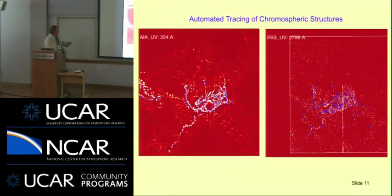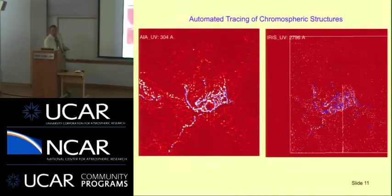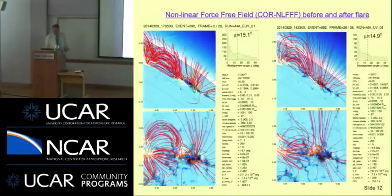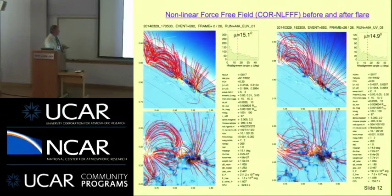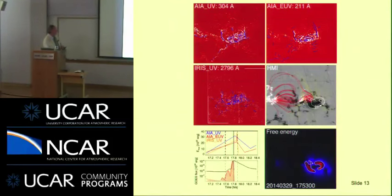The automated pattern recognition code, run on an AIA 211 Å image, picks out coronal loop structures to guide the coronal field modeling. With IRIS at about four times higher resolution than AIA 304 Å, you see much finer structures — loops, fibrils, spicules. My method assumes there are some field-aligned structures I can use for magnetic modeling. The free energy map shows most of the energy gets dissipated right around in the penumbra of the sunspot — because the magnetic field strength is highest there — and when the flare occurs the loops become more dipolar, so you get the most free energy released there.